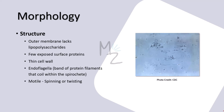Regarding structure, as this bacterium is gram-negative, it has two membranes and its outer membrane lacks lipopolysaccharides, with few exposed surface proteins. Treponema pallidum has a thin cell wall and also has endoflagella — a band of protein filaments coiled within the spirochetes — which helps it move by spinning or twisting.